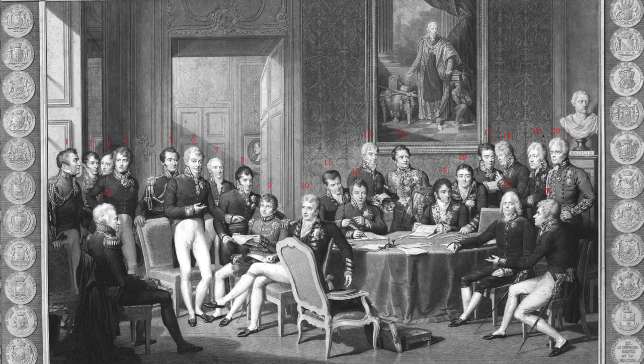The Four Great Powers had previously formed the core of the Sixth Coalition. On the verge of Napoleon's defeat, they had outlined their common position in the Treaty of Chaumont, March 1814, and negotiated the Treaty of Paris 1814 with the Bourbons during their restoration. Austria was represented by Prince Metternich, the Foreign Minister, and by his deputy Baron Johann von Wessenberg. As the Congress's sessions were in Vienna, Emperor Francis was kept closely informed.